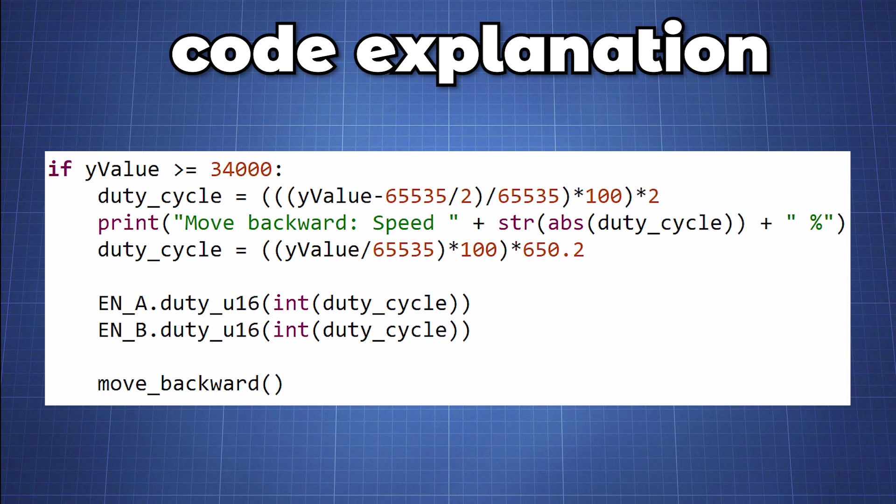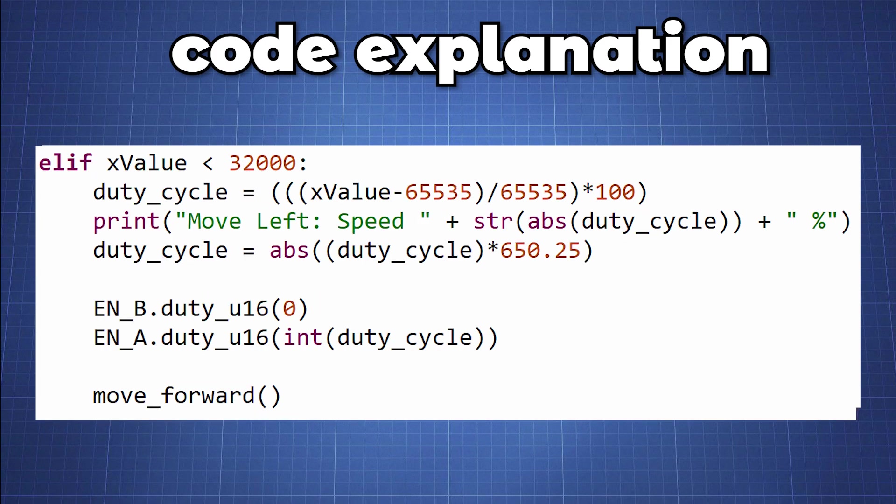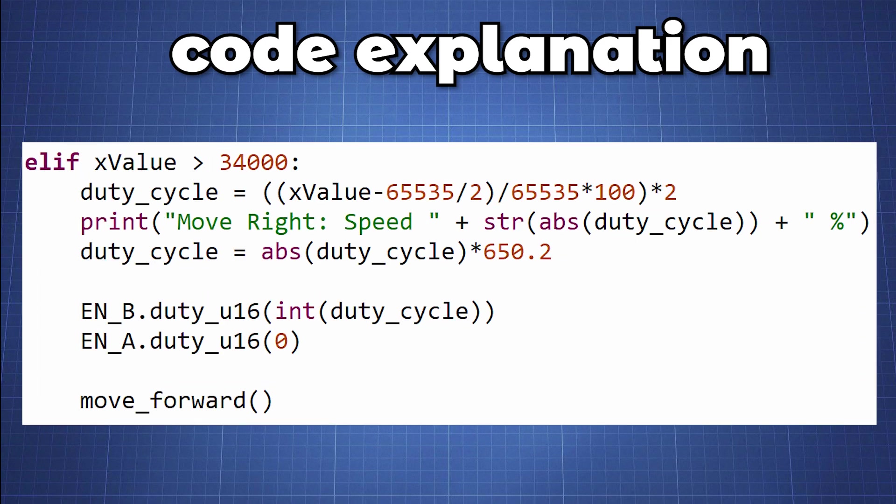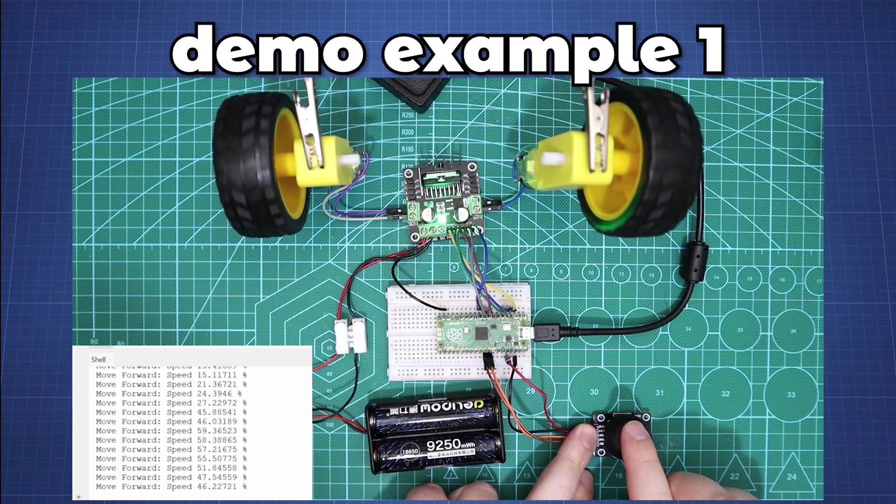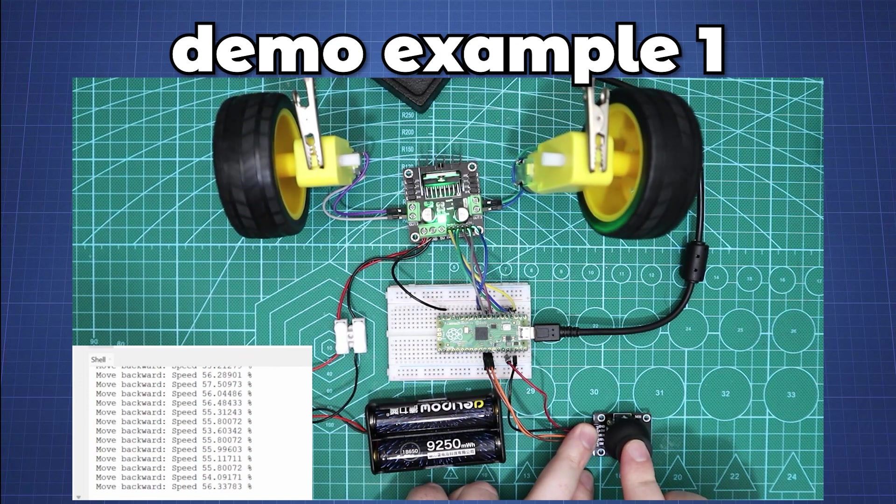With this we can now control the speed of the motors. We will do this for move_forward and turn right and left. If you are interested in knowing how the calculations were done I will upload a detailed description of this topic in the GitHub repository. Uploading this code to the Pico we can now control the motors direction and speed with the joystick.